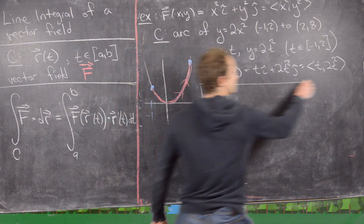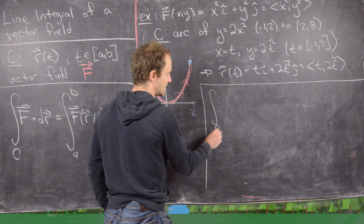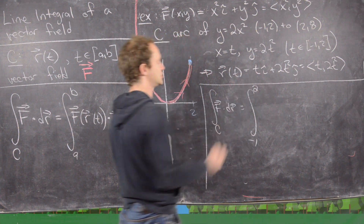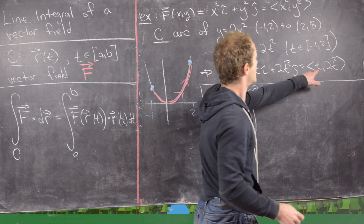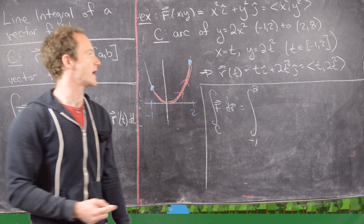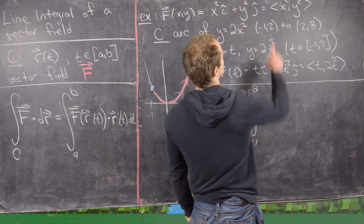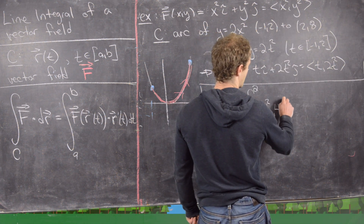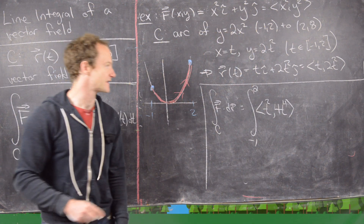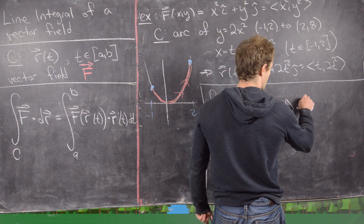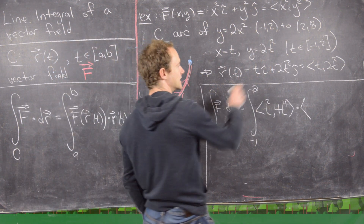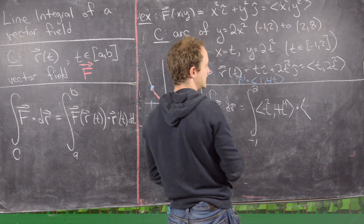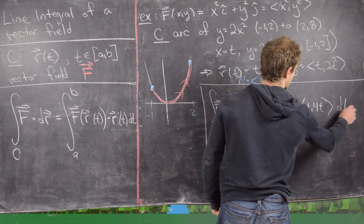Now we apply the formula. The integral over the vector field of F dot dR equals the integral from negative 1 to 2 of F evaluated on the curve, dotted with R prime. Replacing x with t gives t², and replacing y with 2t² gives 4t⁴. So F on the curve is <t², 4t⁴>. Since R = <t, 2t²>, R prime equals <1, 4t>.